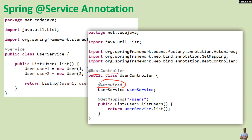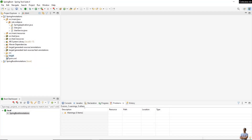We can then inject an instance of this service class into another Spring component, such as a REST controller, through an @Autowired field. We use the @Autowired annotation to tell Spring framework that this component requires an instance of UserService available in the application context, and we call the list method here.